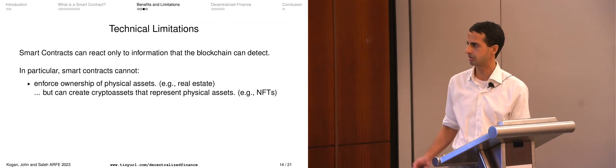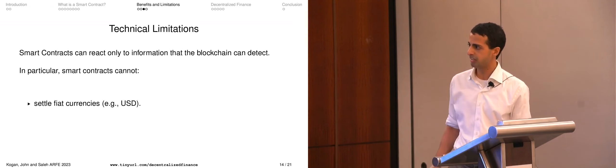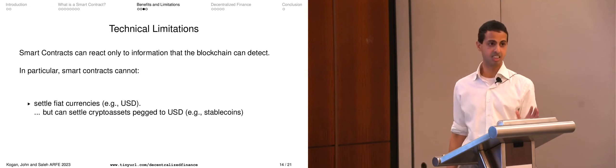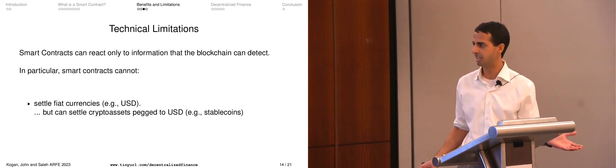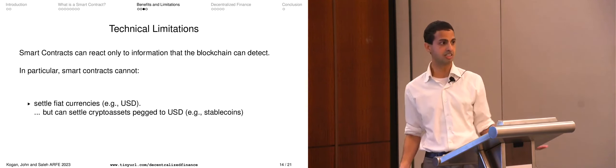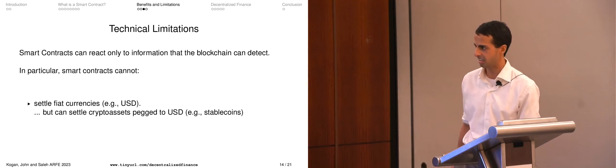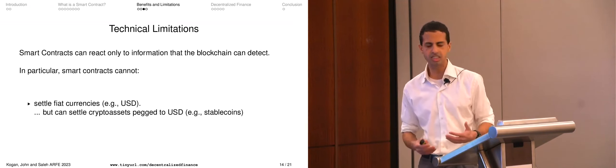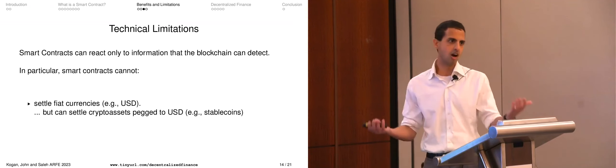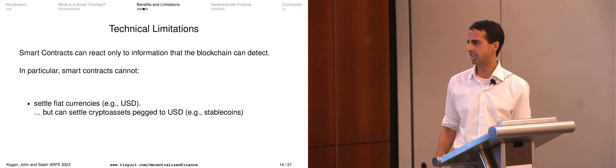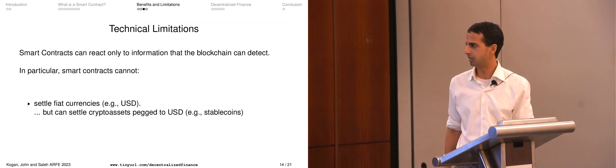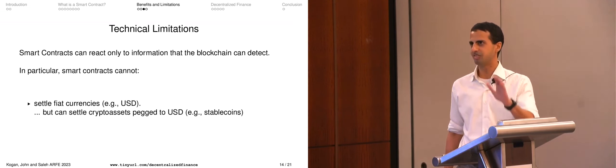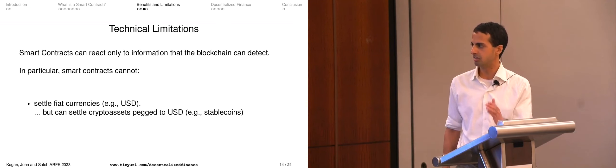For settling fiat currencies, the workaround is obvious — this is where stablecoins come from. We can't create US dollars on Ethereum, but we can create Tether, USDC, or DAI. For example, USDC and USDT: we create a token and back it off-chain. You can't verify what's happening off-chain on-chain, but it's a practical workaround — USDC and USDT have been fairly successful in maintaining their peg over time.